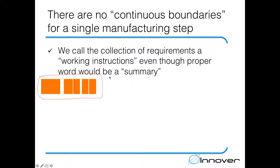Even though we call this collection of requirements 'working instructions,' the proper word would be a summary of EN 1092. What we have done in our FPC system is split the whole EN 1092 into small pieces related to each and every manufacturing step — so we have a working instruction on how to do welding, how to do mechanical cutting, and so on.